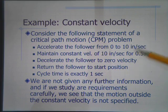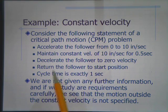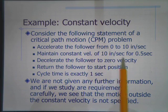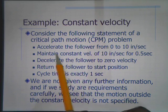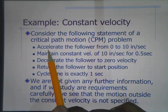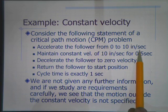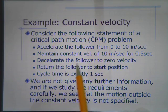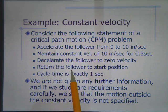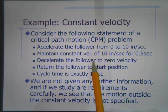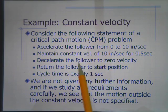If we study these requirements carefully, we see that the motion outside the constant velocity is not specified. What is specified is that we maintain a constant velocity of 10 inches per second for half a second. Everything else is preparation for that — we need to accelerate the follower from 0 to 10 inches per second, and afterwards we decelerate the follower to zero and return to the start position. Both the acceleration, deceleration, and return are just preparation for the constant velocity portion.